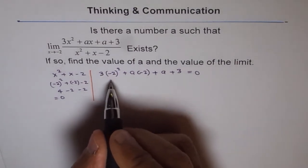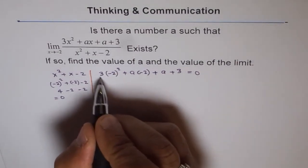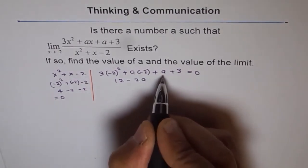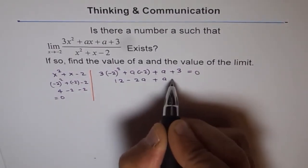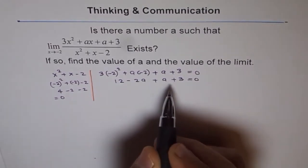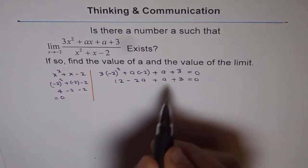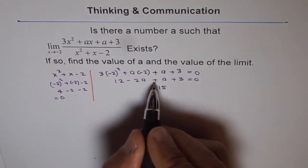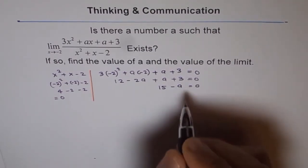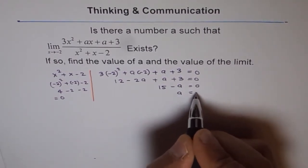So, this is 2 squared is 4, 4 times 3 is 12. So, we get 12 minus 2a plus a plus 3 equals to 0. Now, this can be solved. 12 plus 3 is 15. And minus 2a plus a is minus a equals to 0 which gives us a equals to 15.